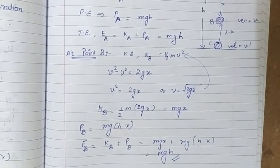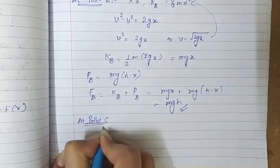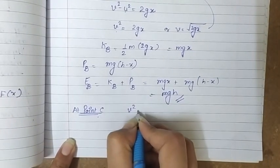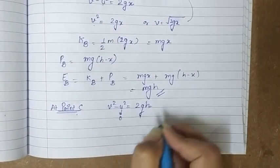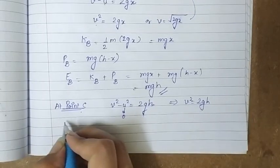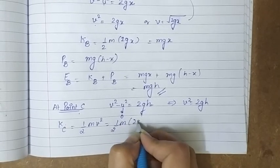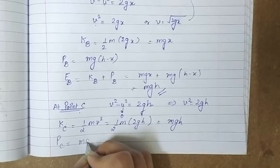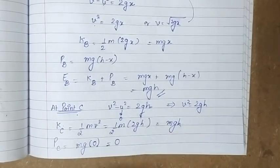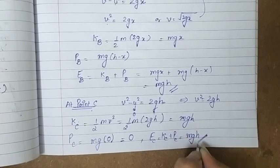At point A and point B we get the same result for total mechanical energy. Now let's find the energy at point C. First we find the velocity at point C using the third equation of motion. The distance covered from A to C is the whole height h, so v² minus u² equals 2gh, and since u equals zero, v² equals 2gh. Kinetic energy at C is half mv², which is half m times 2gh, giving mgh. Potential energy at point C is zero since the height from the ground is zero. So total energy at point C is mgh plus 0, which equals mgh.